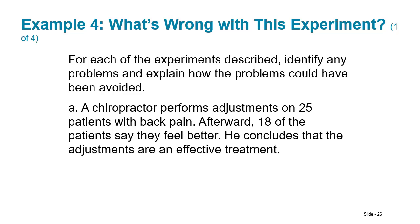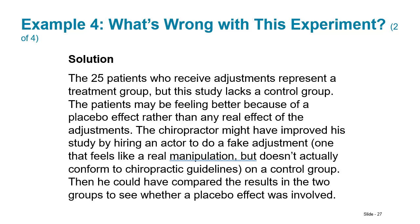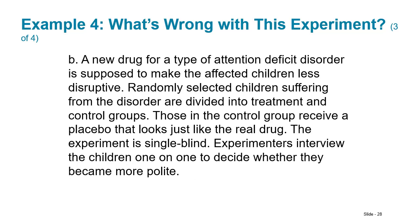A chiropractor performs adjustments on 25 back-pain patients; 18 say they feel better, and he concludes adjustments are effective. The problem: those 25 patients represent a treatment group, but the study lacks a control group. He should have had some patients receive no adjustments — or fake adjustments — to compare results.